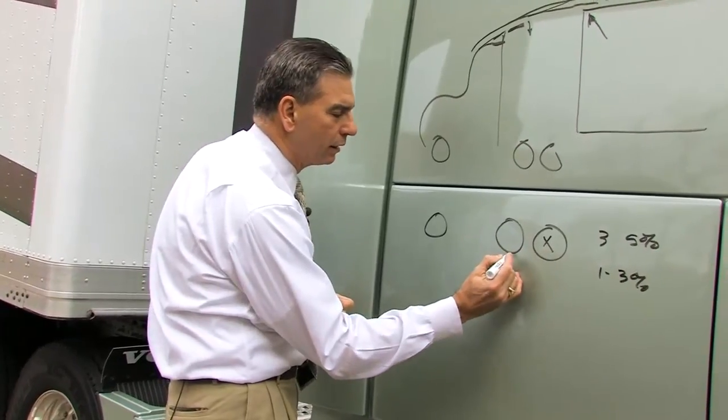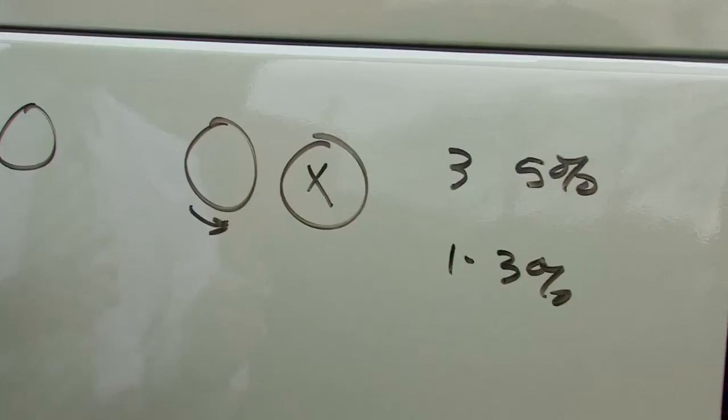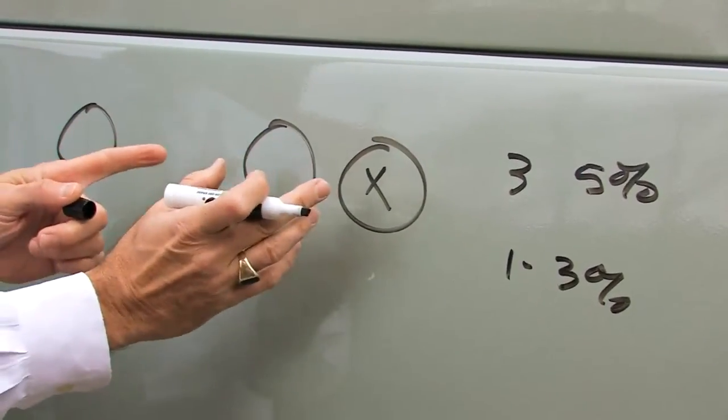In the final installment of this series on truck aerodynamics, we'll talk about some of the specs you can't always see, including 6x2 axle configurations.